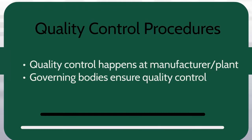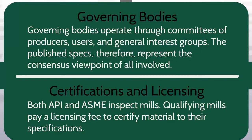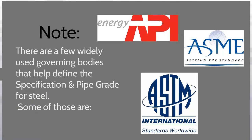Quality control happens at the manufacturer or the plant. Governing bodies ensure quality control. Governing bodies operate through committees of producers, users, and general interest groups. The published specs therefore represent a consensus viewpoint of all involved. Both API and ASME inspect mills. Qualifying mills pay a licensing fee to certify material to their specifications. There are a few widely used governing bodies that help define the specification and pipe grade for steel. Some of those are ASTM, ASME, and API.